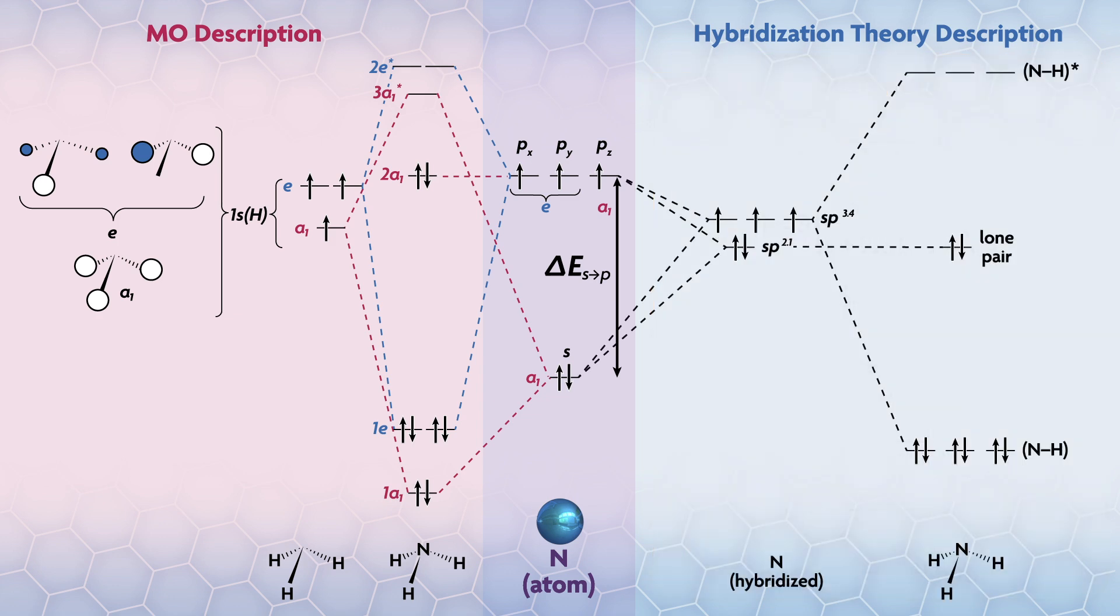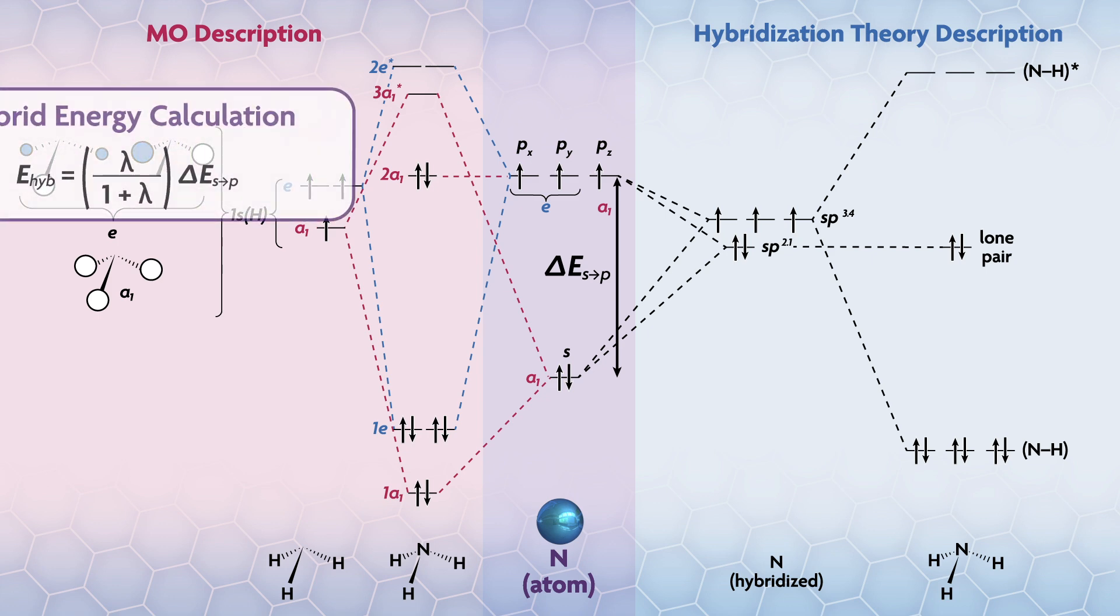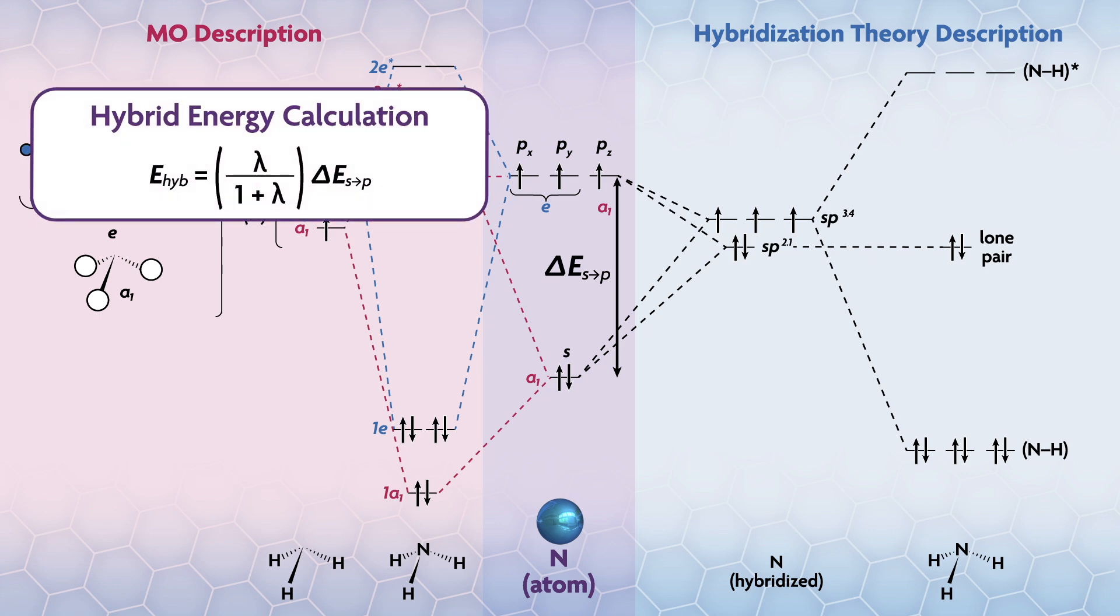Now we can draw a hybridization diagram much like we did for MO theory. What we've done is generate nitrogen sp hybrids that point directly at the hydrogens, then take in what is left for the lone pair. We can even calculate the energies of these hybrids relative to the sp energy gap. The equation for that is here, where E_hybrid is the energy of the hybrid orbital and ΔEsp is the s to p orbital energy gap. Basically, if you have a pure s orbital, which is sp⁰, then it will be zero, and if you have a pure p orbital, which is sp∞, then you get one for the first term.